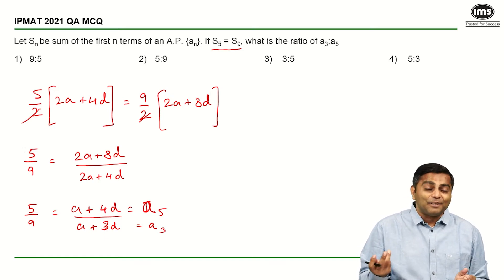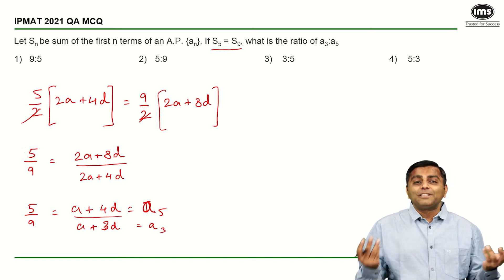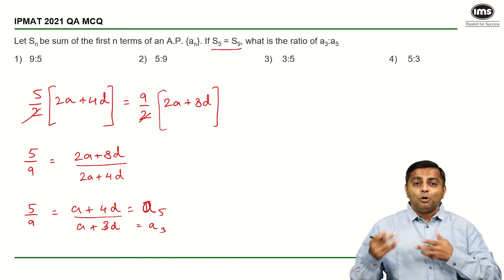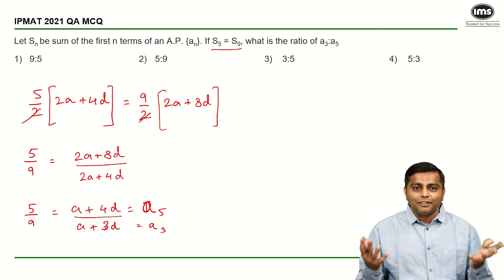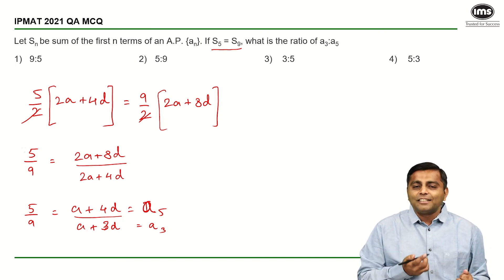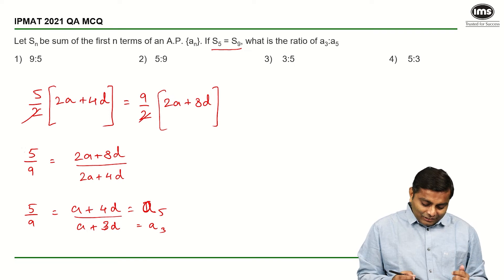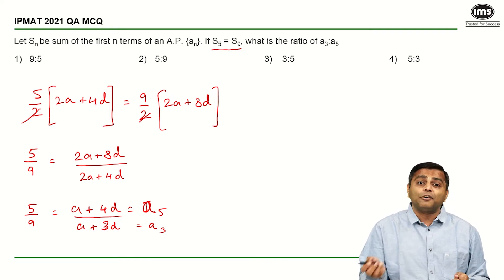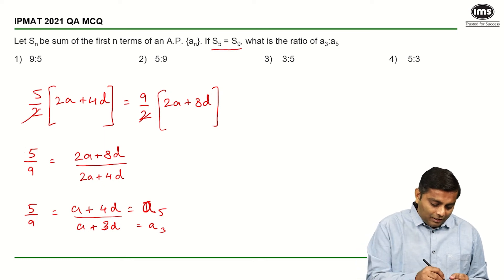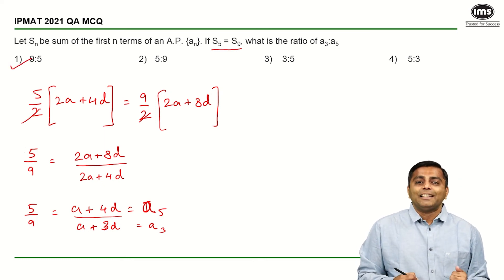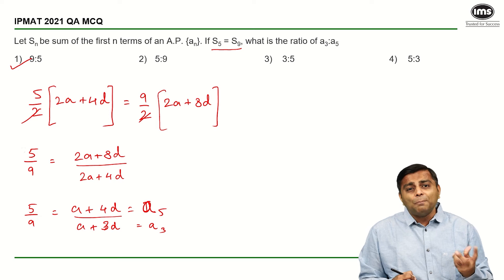Yeah, it is as simple as this. Do not be surprised if you see such simple questions and do not start double checking your work that is it for real. Yes, it is for real. Such kind of questions have appeared in IPMAT. So that is our answer. We wanted to find A₃ is to A₅, so we are going to say 9 is to 5 and not 5 is to 9. So the answer is first option 9 is to 5.